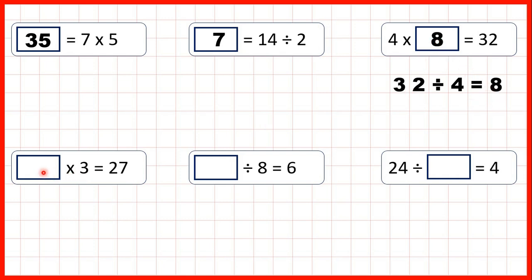Now, something times 3 equals 27. Again, it's a missing number multiplication, so we can divide to find our missing number. 27 divided by 3 is 9, because 9 times 3 is 27, so our missing number is 9.